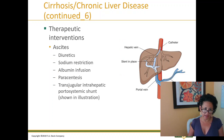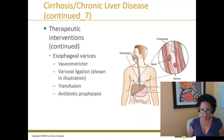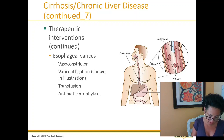Interventions for ascites: treat with diuretics, sodium restriction, albumin infusion — these are things the doctor will order. For varices, vasoconstrictors are used because of bleeding, along with transfusions and prophylactic antibiotics.